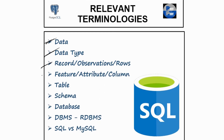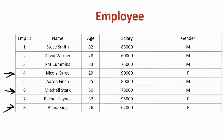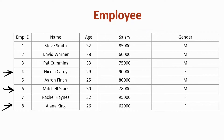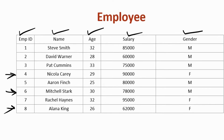Similarly, let's understand about feature, attribute, or column. As most of you have already guessed, these are the columns on the screen — starting from employee ID, name, age, salary, and gender. Each column is telling you what information you have in the form of data. The term column is often used in Excel. However, if you are working in SQL or Python, you may hear the term as attribute or features.